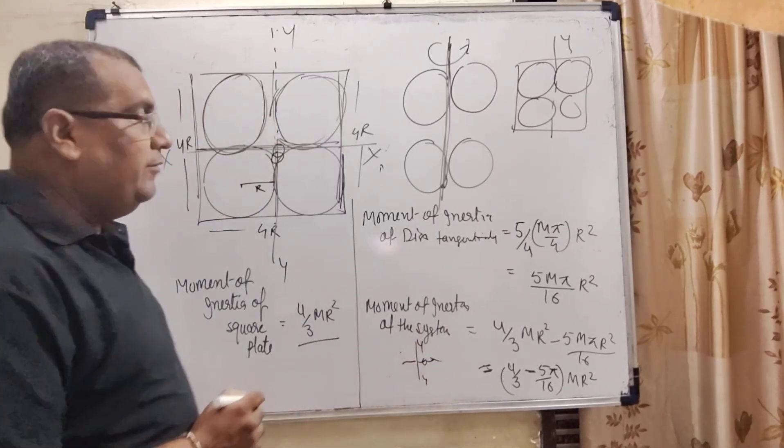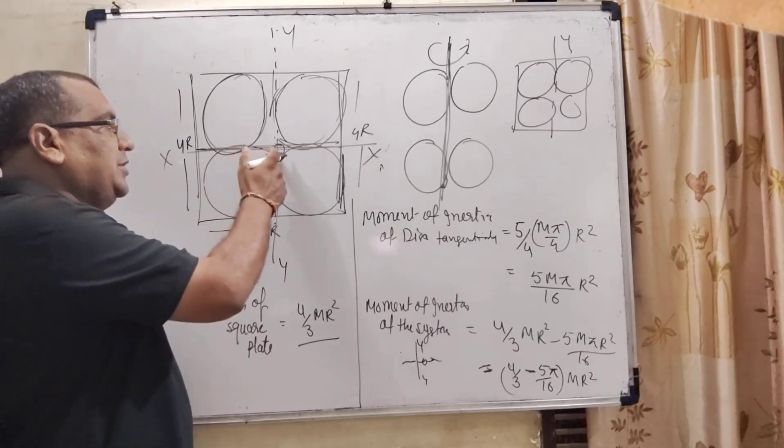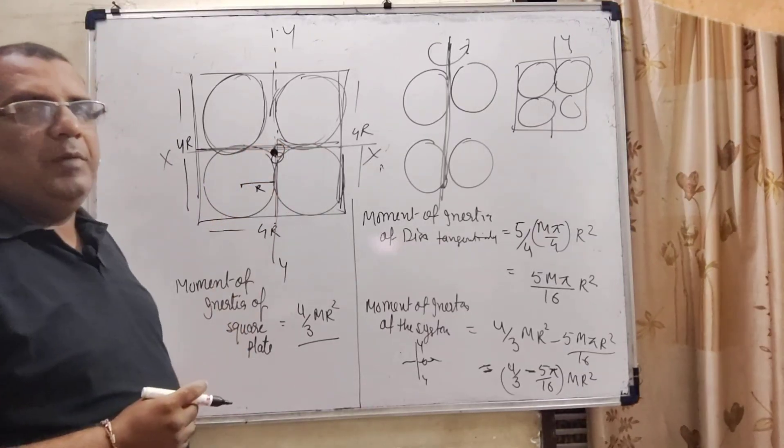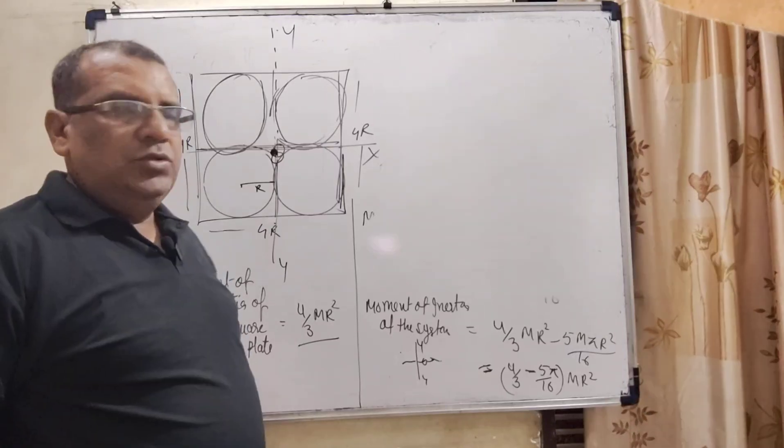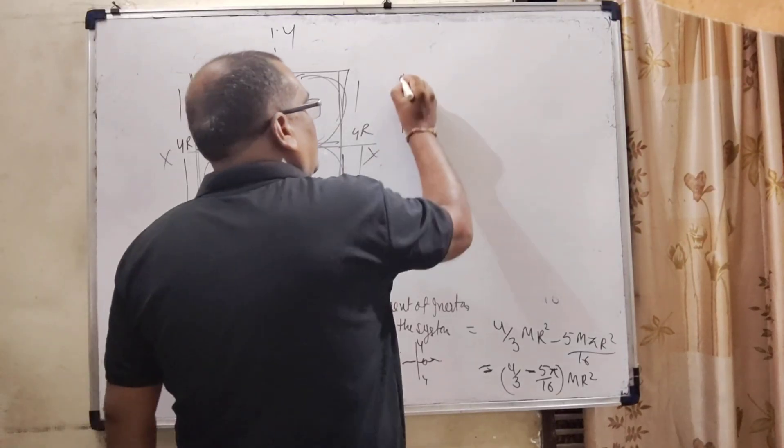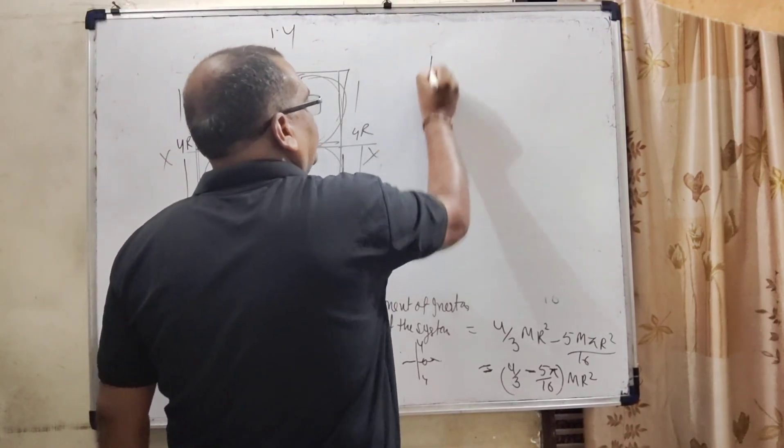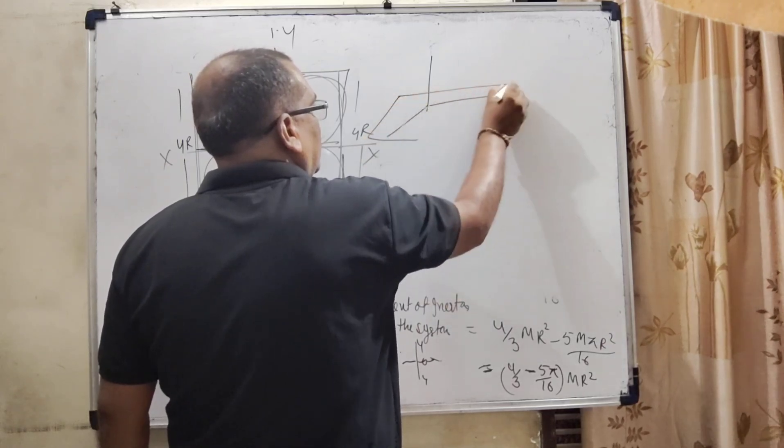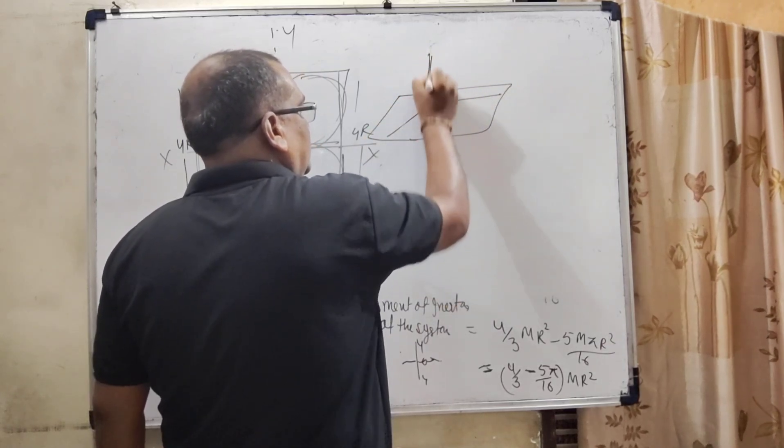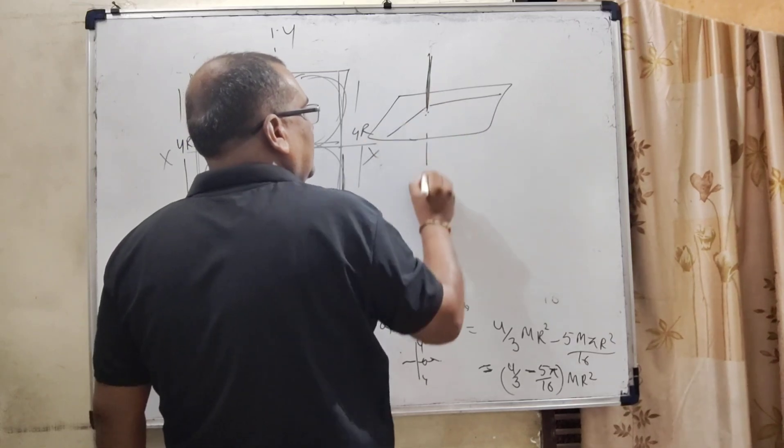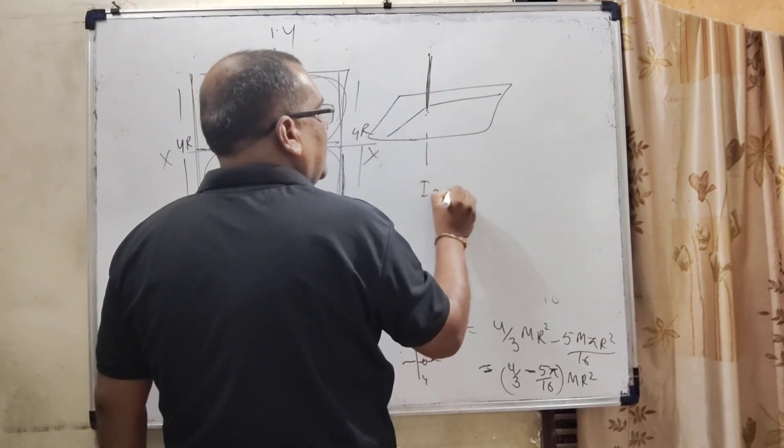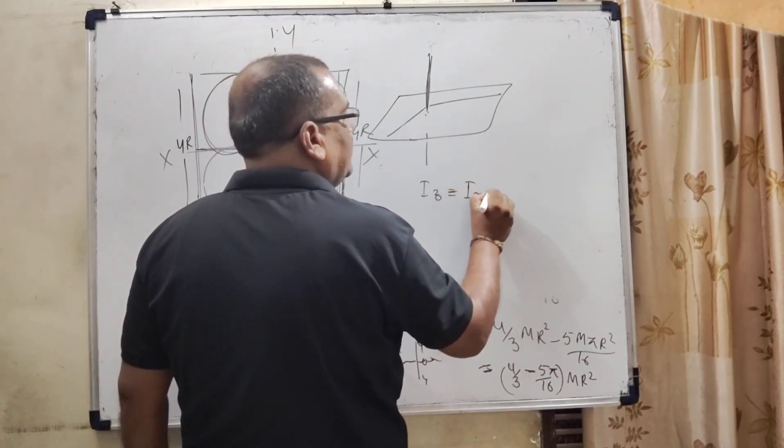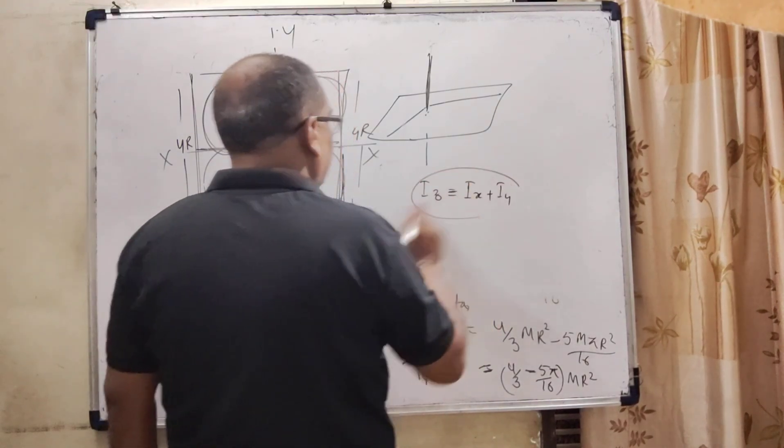But here we have to find moment of inertia about the Z axis, means we are using perpendicular axis theorem. What does the perpendicular axis theorem say? Moment of inertia of this plane lamina with axis passing perpendicularly through the lamina equals moment of inertia of mutually perpendicular axes of the lamina, means Ix plus Iy.